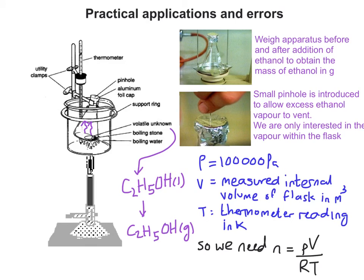If we know that the pressure at sea level of atmospheric pressure is 100,000 pascals, the volume can be the measured internal volume of the flask in metres cubed. This can be obtained by filling the flask after the experiment with water right up to the brim and pouring this amount into another measuring cylinder and checking what volume it adds up to. The thermometer reading at the end is converted to Kelvin by adding 273. We need to work out the number of moles of ethanol vapour that we have.